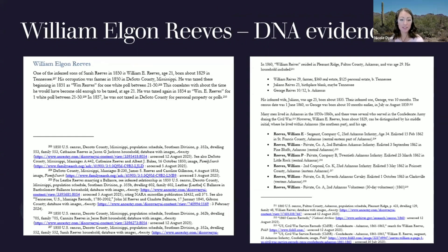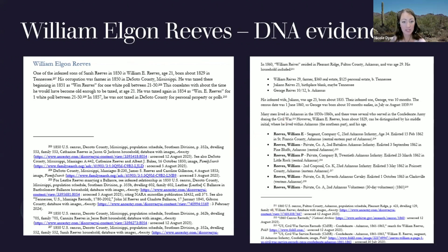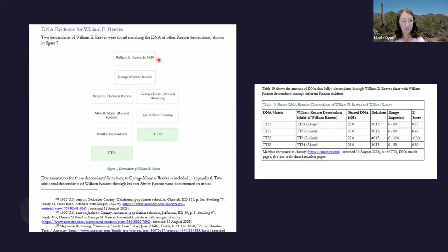The next child with DNA evidence was William Elgin Reeves. He didn't have a lot of DNA evidence — just a few matches — because he only had one child born before he died in the Civil War. I had to do some disambiguation of William Reeves, since there were two men named William E. Reeves in the Confederate army from Arkansas. After working through that documentary evidence showing he had a child named George, I was able to move into the DNA evidence, where William's son George had two descendants showing up as matches. I used a separate diagram and a separate table for each child of Sally, making the diagrams easily fit within a page — legible and readable.